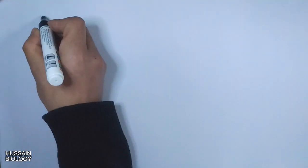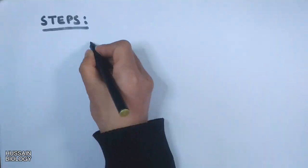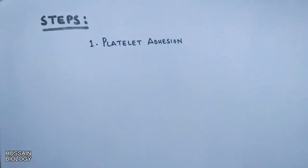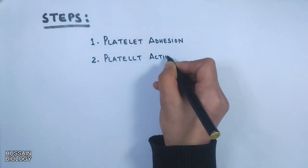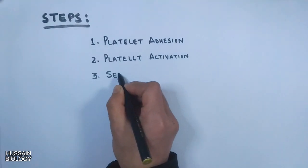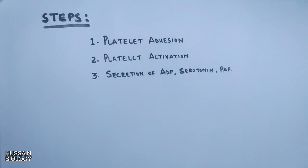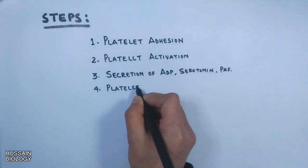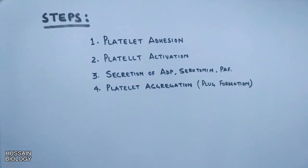There are four steps involved in platelet-mediated hemostasis: platelet adhesion, platelet activation, followed by secretion of ADP, serotonin, PAF and other factors, and finally platelet aggregation, which finalizes the plug formation.